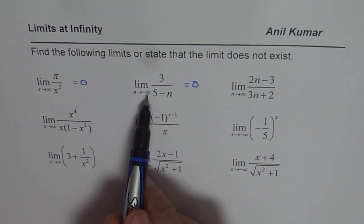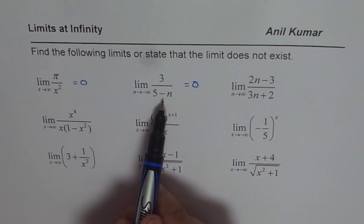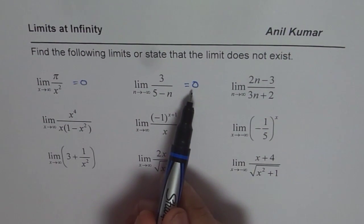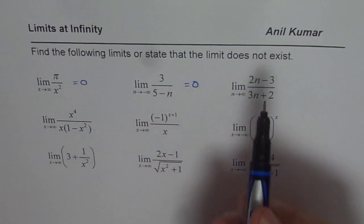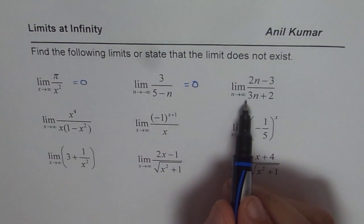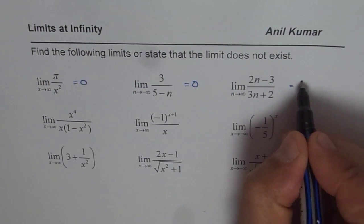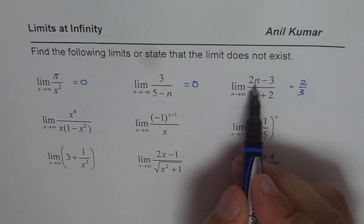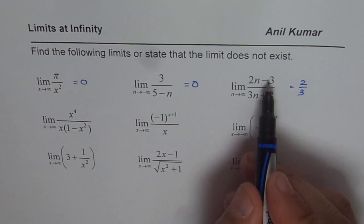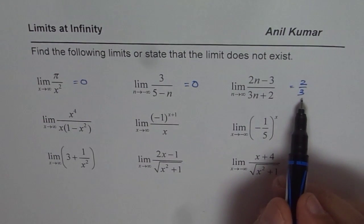The only thing important to understand is that you could approach from the positive side or negative side. In this case you approach from the positive side. Sometimes when you are doing a horizontal asymptote for rational functions, that is the horizontal asymptote. To find the limit of 2n minus 3 over 3n plus 2, we take n as a common factor — rather 2n. So the ratio is 2 over 3, since 3 divided by n and 2 divided by n each approach 0, leaving 2 over 3 as your answer.